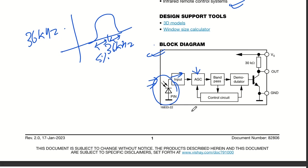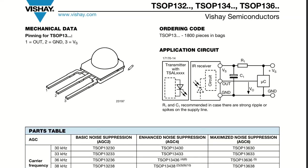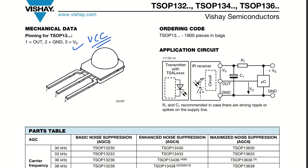Now let us talk about pin configuration. This IR receiver has three pins: pin number one is the output pin, pin number two is the ground pin, and pin number three is the VS pin, which is the supply pin - we generally call it VCC.